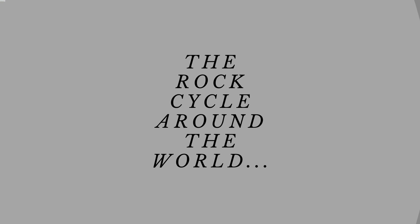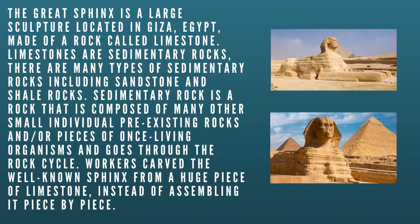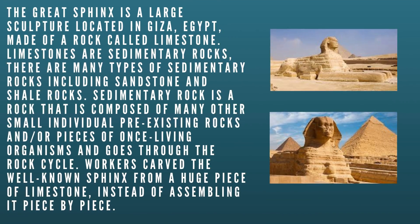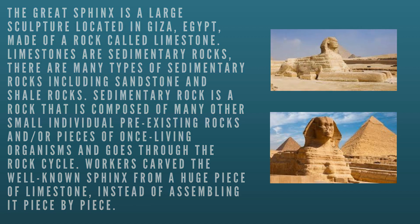The Great Sphinx is a large sculpture located in Giza, Egypt, made of a rock called limestone. Limestone is a sedimentary rock. There are many types of sedimentary rocks including sandstone and shale. Sedimentary rock is composed of many small pre-existing rocks and/or pieces of once-living organisms and goes through the rock cycle. Workers carved the sphinx from a huge piece of limestone instead of assembling it piece by piece.